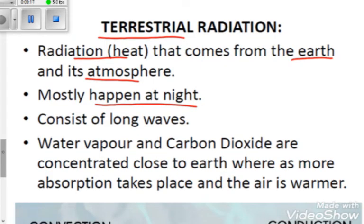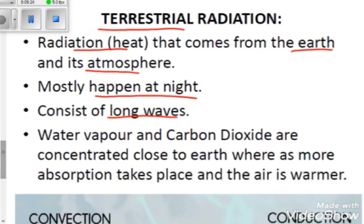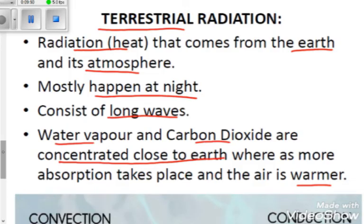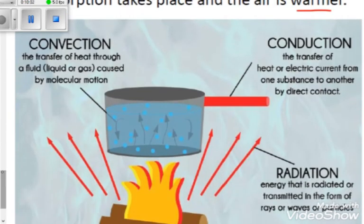Terrestrial radiation consists of long waves only, whereas insolation can consist of both short waves and long waves. There is water vapor and carbon dioxide concentrated close to the Earth where more absorption takes place, making the air warmer. The high concentration of water vapor and carbon dioxide closer to the Earth means there is a large amount of these gases near the surface.